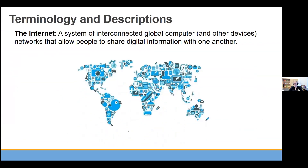So some of the terminology you're going to want to know — the first term is Internet. It basically means a system of computers and other devices that use networks to access and call things from each other. It's basically interconnected global computers that allow people, other computers, and artificial intelligence to share information. It's a way to call up information from one device and get it to another device so that you can look at it.